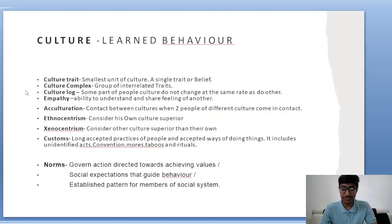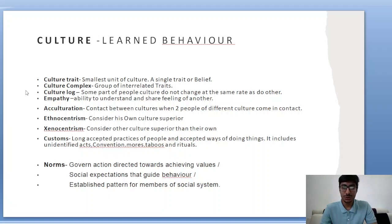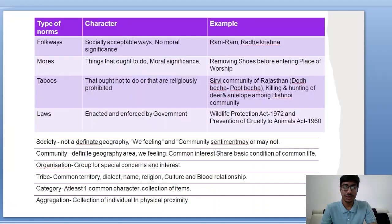Norms are of four kinds: folkways, mores, taboos and laws. Folkways are socially acceptable ways that do not hold moral significance — for example, in Haryana, people greet each other by saying 'Ram Ram,' but not doing so doesn't carry much moral significance. Mores are things we are supposed to do and carry moral significance — for example, removing shoes before entering a place of worship.